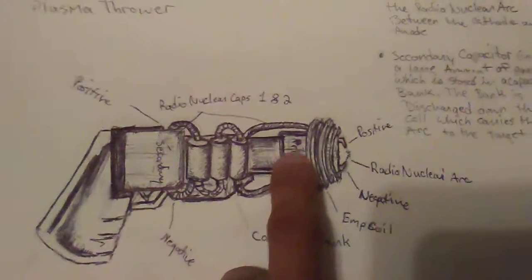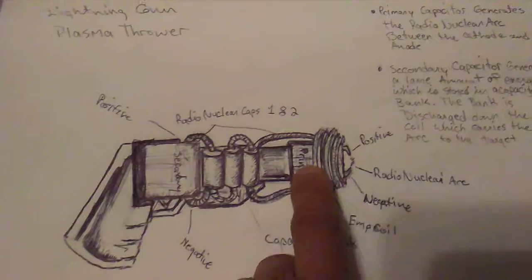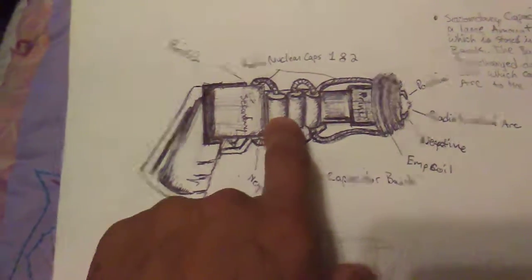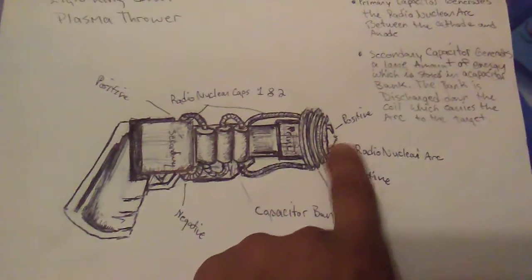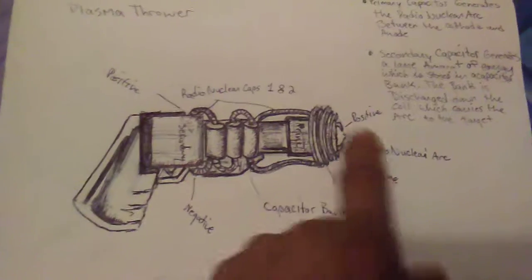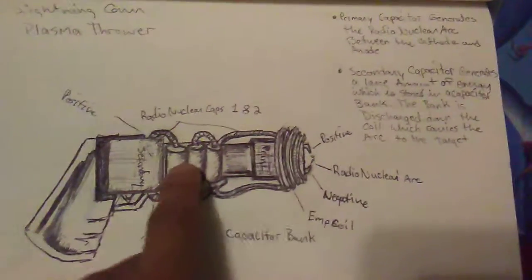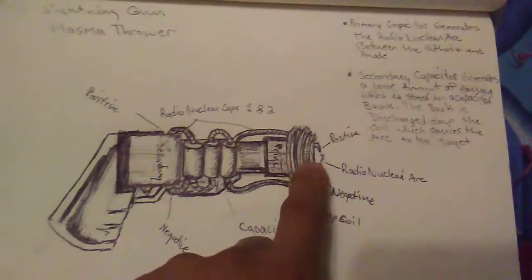Here's a coil around this primary capacitor that has the open arc. This one's storing the energy in the capacitors, then you're discharging it through this coil. This open arc right here has a radio nuclear arc, and the magnet, the EMP that you discharge out of these coils is going to discharge out in a circular motion.